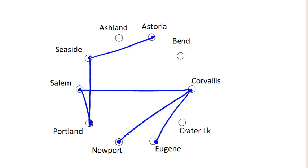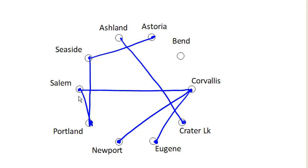How about Portland to Astoria? Nope, that would create a circuit. How about Ashland to Crater Lake? Oh, that's fine — Ashland to Crater Lake is fine. How about Eugene to Portland? Nope, that creates a circuit. How about Newport to Portland? Nope, that creates a circuit. How about Newport to Seaside? That one's kind of tricky, but that is also creating a circuit, so we're not going to do that one. How about Bend to Eugene? Bend to Eugene — that's fine, no problem there.